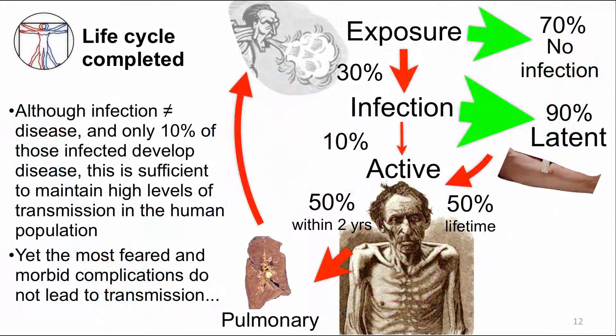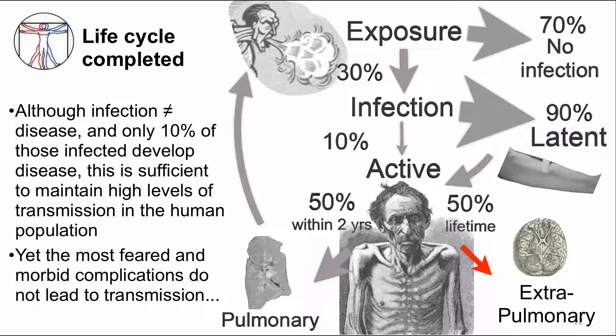Pulmonary TB disease allows MTB to complete its life cycle, exiting its host and transmitting to another human. Although TB infection does not equal TB disease and only 10% of infected people progress to active TB disease, it is sufficient to maintain a high level of TB transmission in the human population. However, the most feared and morbid complications actually do not directly lead to transmission — these are the extra-pulmonary TB disease complications.